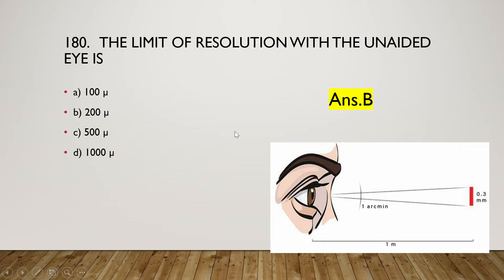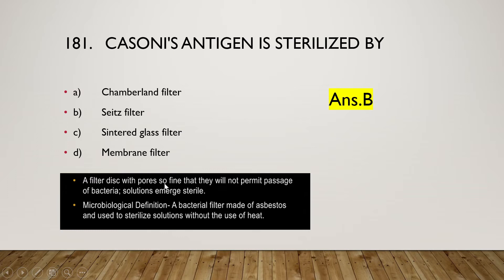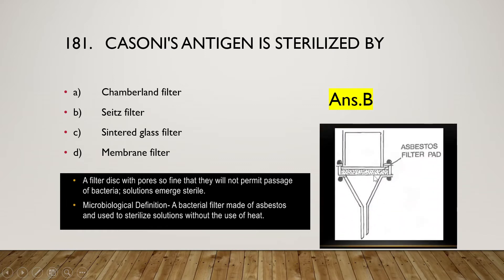The next question: Casoni's antigen is sterilized by Chamberland filter, Seitz filter sheets, sintered glass filter, or membrane filter? The right answer is option B, the Seitz filter. This filter disc has pores so fine that they will not permit passage of bacteria, rendering the solution sterile. This sheet filter is made up of asbestos and is used to sterilize solutions without the use of heat.